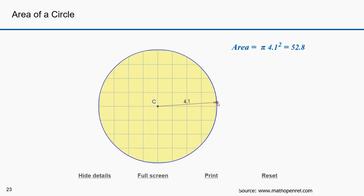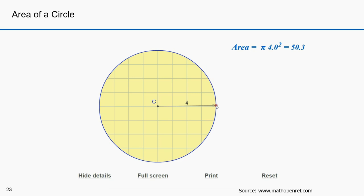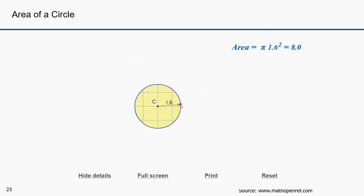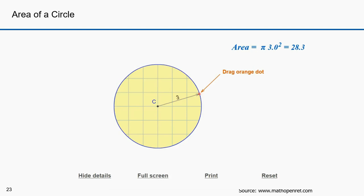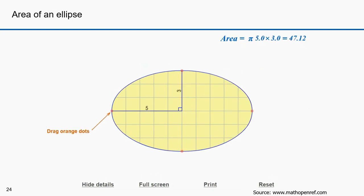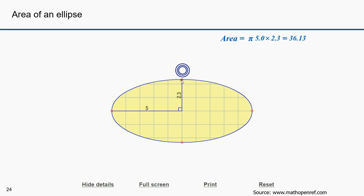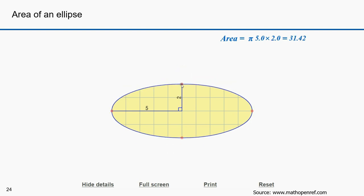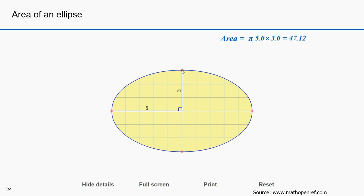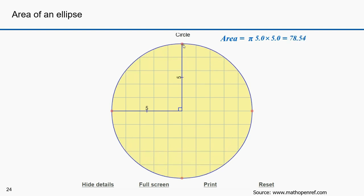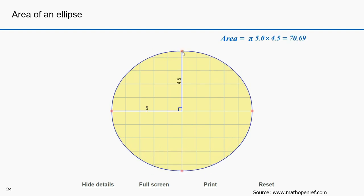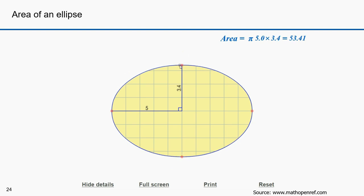I want to talk a bit about areas of these shapes. As you know, the area of a circle is πr². The area of an ellipse is π times the semi-major axis times the semi-minor axis. If you make this a circle, the semi-major axis and semi-minor axis are the same length, and that's the same as πr².